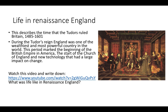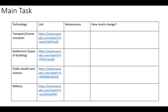Life in Renaissance England is very different to the medieval period. We're going to look at some specific ideas: transport and communication, settlements, public health and science, and the military. Watch the links provided — there are four separate videos available. In the Renaissance box, write examples of technology or advancements in each particular area, and tell me how much has changed compared to what was there before. I'll also be going through some slides on this Loom video, so come back and add more detail from those slides.